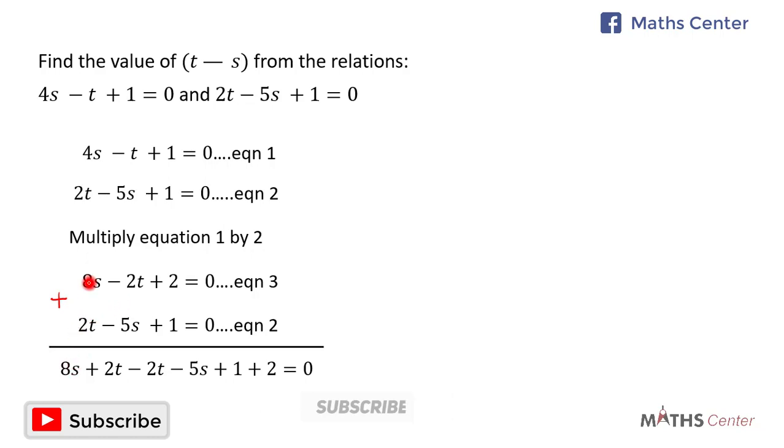I'll have 8x plus 2t minus 2t minus 5x plus 2 plus 1 equals zero.